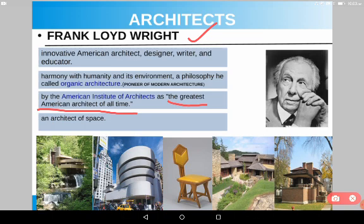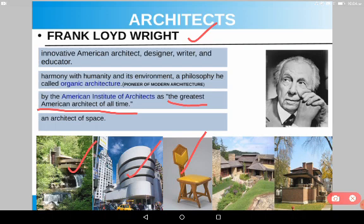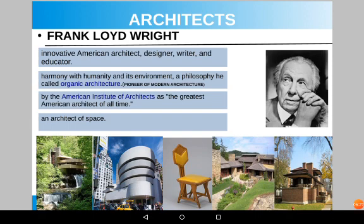He is also regarded as an architect of space. His famous contributions include Fallingwater, the Guggenheim Museum, the Peacock Chair (an interior work), Taliesin House, and Robie House. He has also done many projects, one of which is Broadacre City, and a part of it is now a UNESCO World Heritage Site.